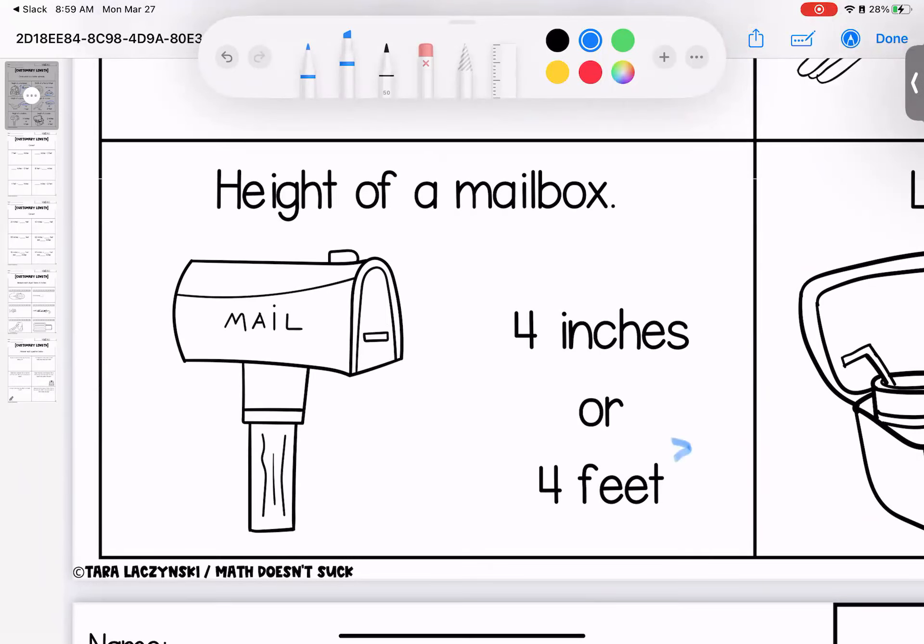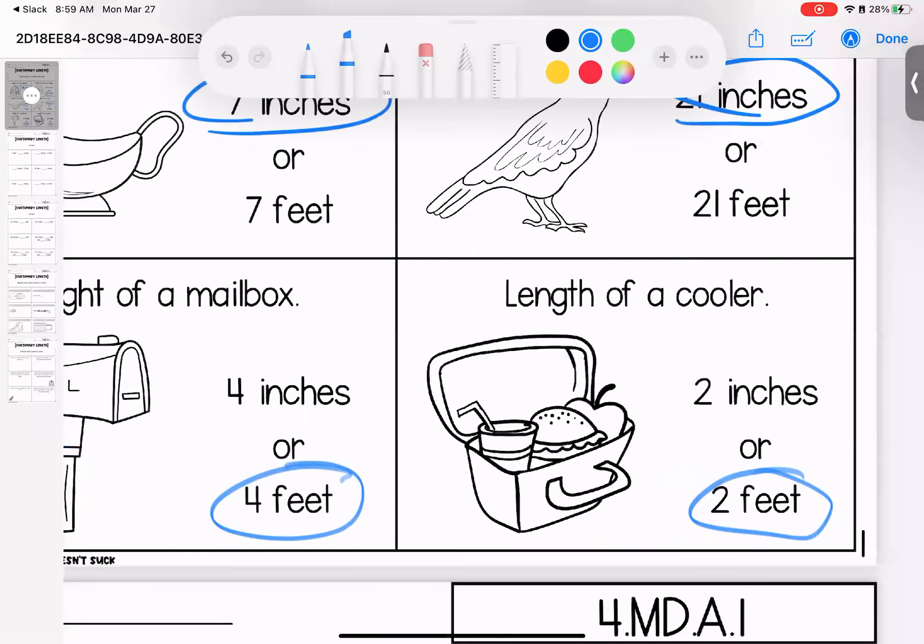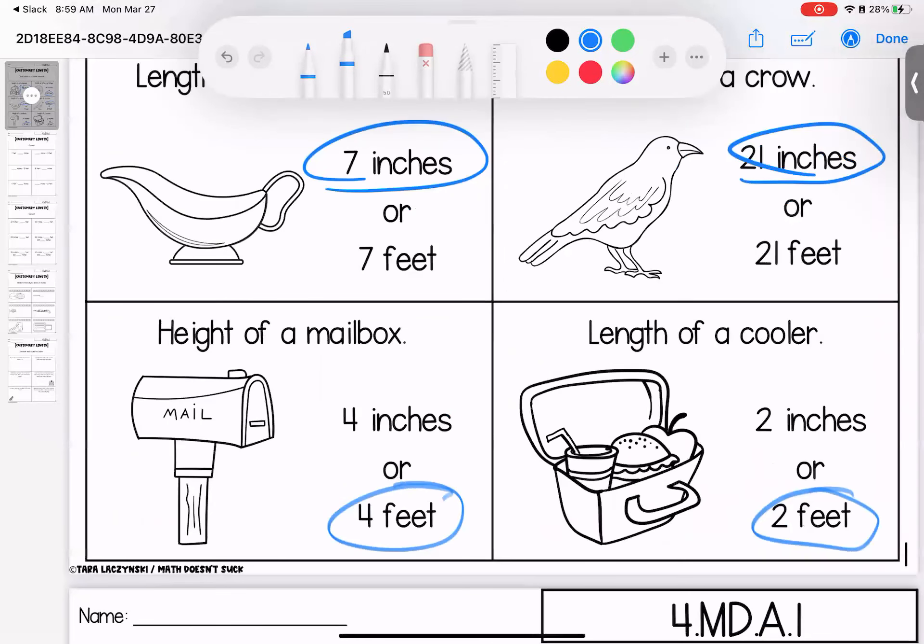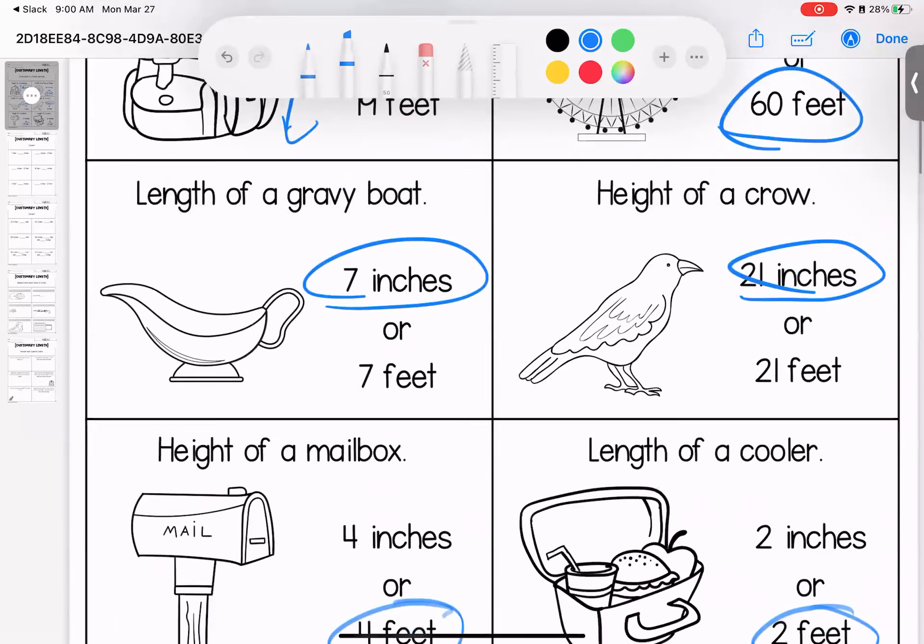Height of a mailbox, 4 feet. If it was 4 inches and our mail person tried to put mail inside, they'd have to bend all the way down to the ground to use it. Length of a cooler, we're talking about 2 feet. If it's only 2 inches, we might be feeding an ant. We're not going to be able to get much in there. Any questions on these kiddos? Bring them with you to class.